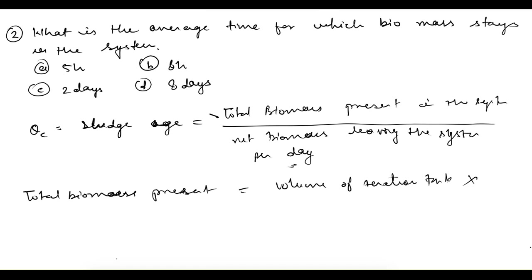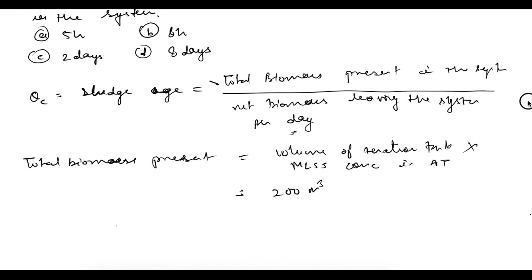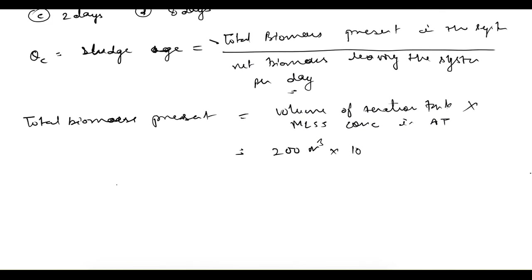Total biomass = volume of aeration tank × MLSS concentration = 200 m³ × 1000 L/m³ × 2000 mg/L. Converting to kg (dividing by 10⁶), total biomass = 400 kg.